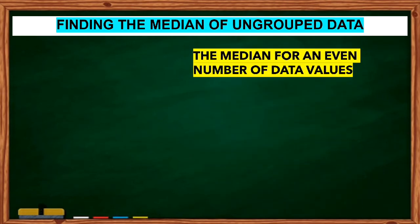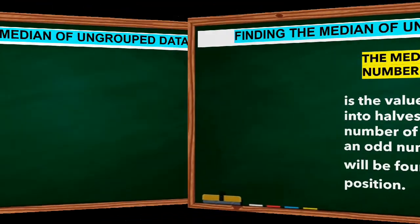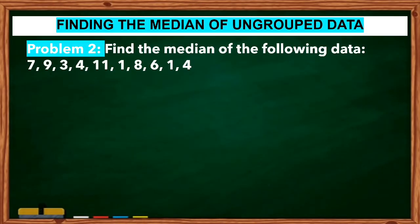The median for an even number of values is the value that divides the data into half. If n represents the number of data values and n is an even number, then the median will be found in the (n + 1) / 2 position. Problem 2: Find the median of the following data: 7, 9, 3, 4, 11, 1, 8, 6, 1, 4.